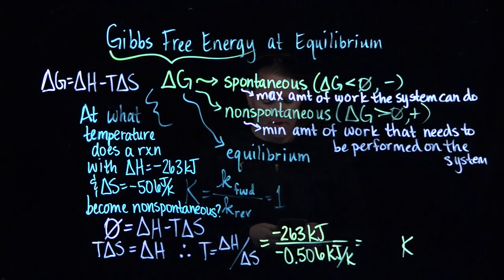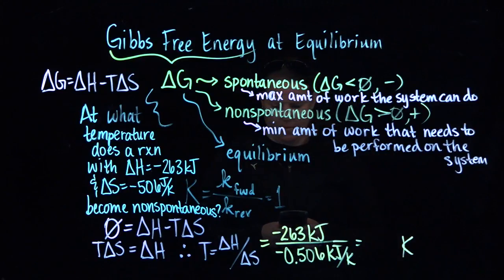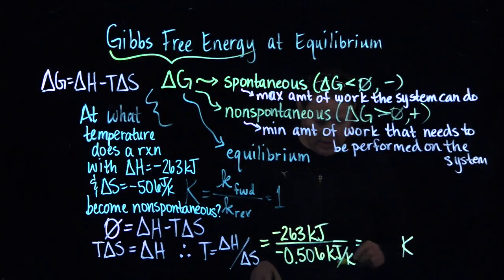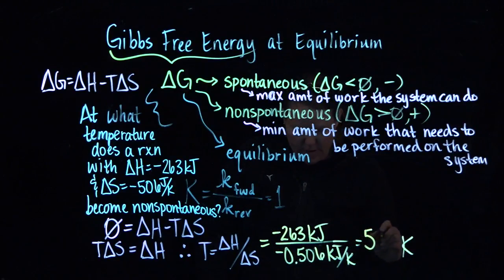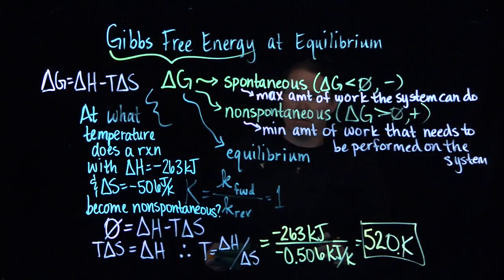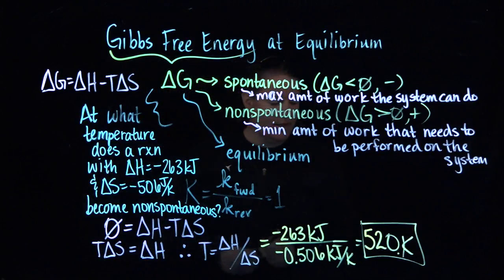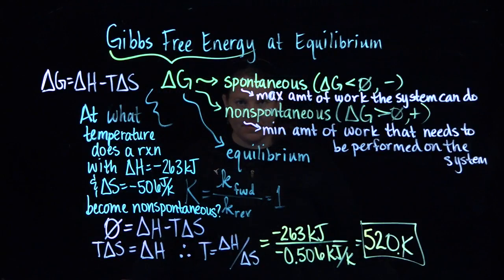I have my calculator on me now. So what we're going to do is we're going to plug in negative 263 divided by negative 0.506. And I get a number like 520 K. Pretty high. Above this temperature, this reaction that was spontaneous below it is suddenly non-spontaneous. And with that, I shall bid you adieu. Until next time.